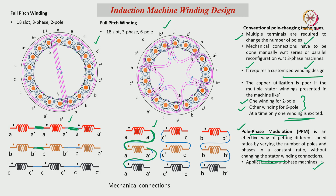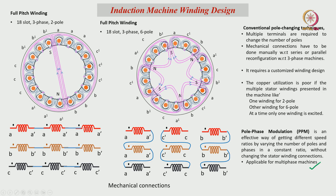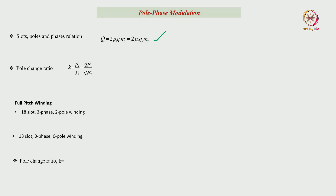If the winding is designed for 2 different pole combinations — one for 2 pole, other for 6 pole — the copper utilization factor is less. In order to make symmetrical pole formation without changing the stator terminals, in pole phase modulation there is no need to change these connections and we can change the number of poles symmetrically. The pole phase modulation without changing the stator winding connections means we have to utilize multiphase machines. The generalized equation is: Q equals 2 times number of phases times number of poles times slots per pole per phase.